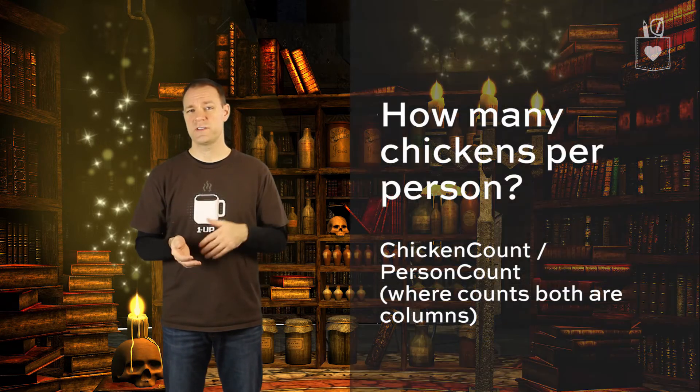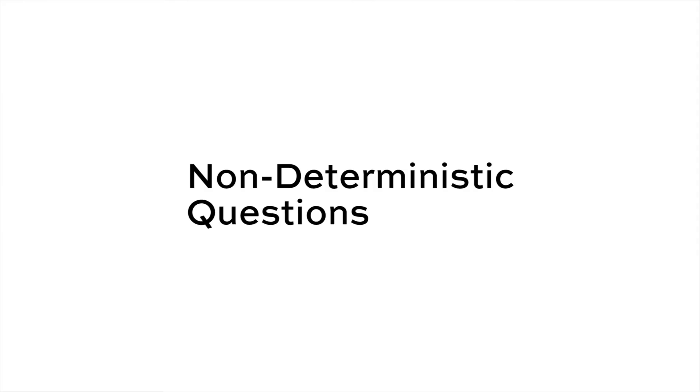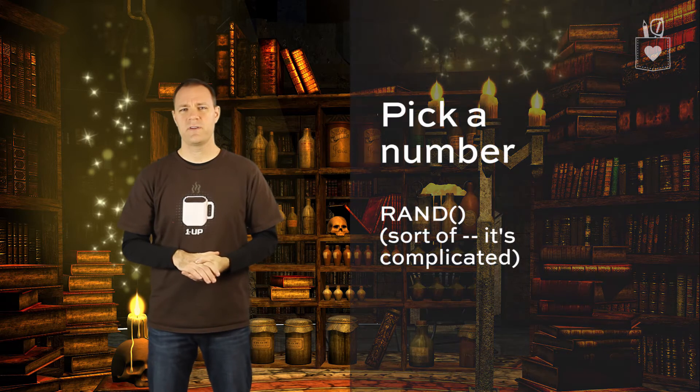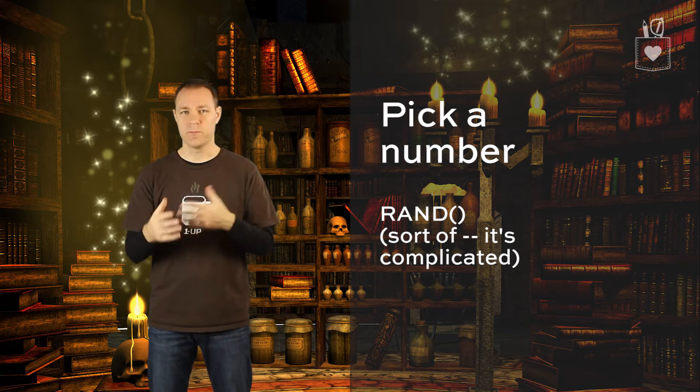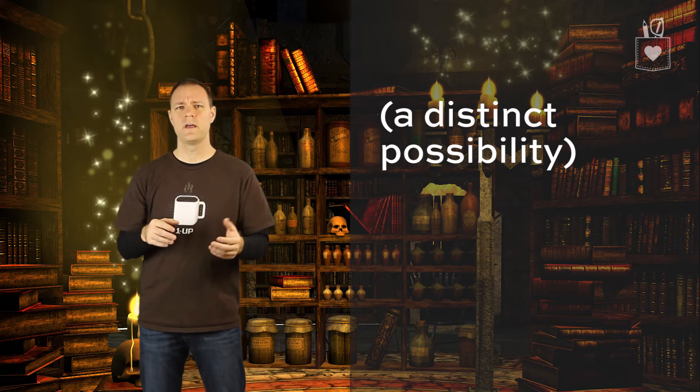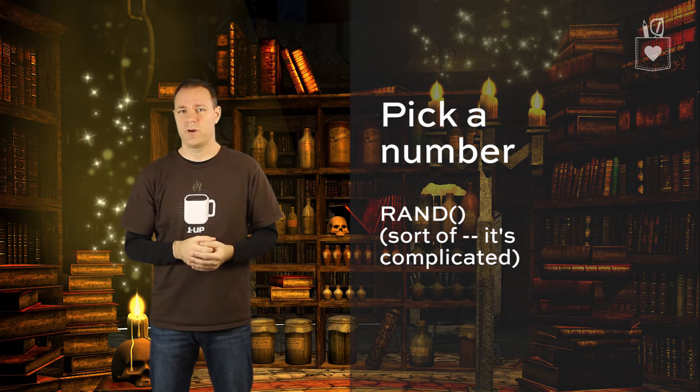One more: if I have six chickens and six people, how many chickens do I have per person? Well, assuming the people aren't being eaten, it's always going to be one chicken per person. Here's a non-deterministic question: how old am I? That depends, because while my birthday is static, today's date is ever changing, as is my age. If you ask me that question next year, you'll get a different answer. So in that sense, it's non-deterministic. Here's another one: I'm thinking of a number between one and 100 — what number am I thinking of? I'm always going to choose a different number, so with any sort of randomization, that's also going to be non-deterministic.